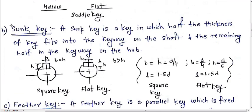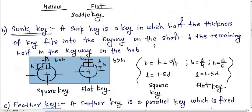The second type of key is the sunk key. A sunk key is defined as one in which half the thickness of the key fits into the keyway on the shaft and the remaining half fits into the keyway on the hub. You can see in this figure the basic meaning of the keyways and how half the thickness of the key sits in each section.